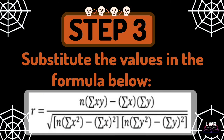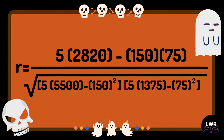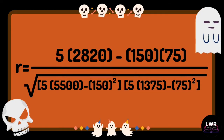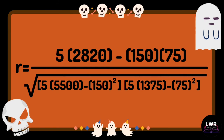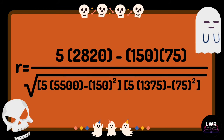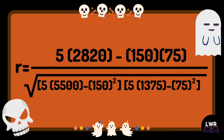Step number 3: substitute the values in the formula below. So if you substitute the values in the formula, r is equal to 5 times 2,820 minus 150 times 75, all over the square root of quantity 5 times 5,500 minus 150 raised to 2.